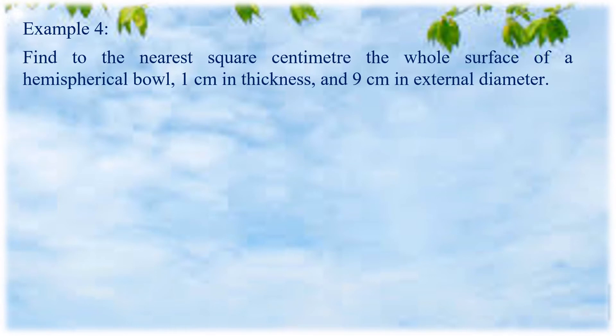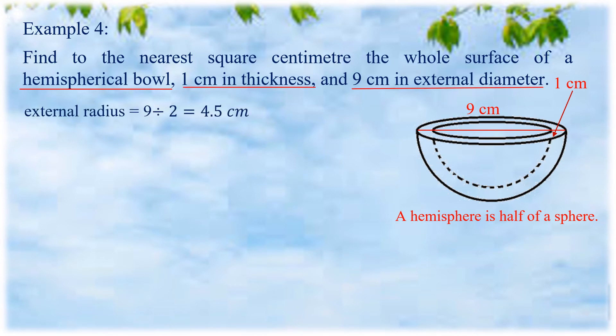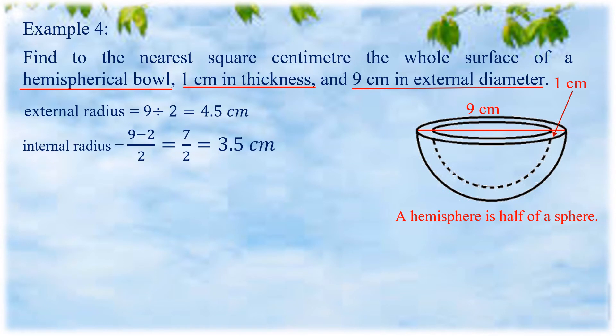Let us have example number 4. Find, to the nearest square centimeter, the whole surface of a hemispherical bowl 1 centimeter in thickness and 9 centimeters in external diameter. The diameter is 9 cm and the thickness is 1 cm. Note that a hemisphere is half of a sphere. The external radius is 9 divided by 2, which equals 4.5 centimeters. The internal radius is found by subtracting 2 from 9 and dividing by 2, giving 3.5 centimeters.